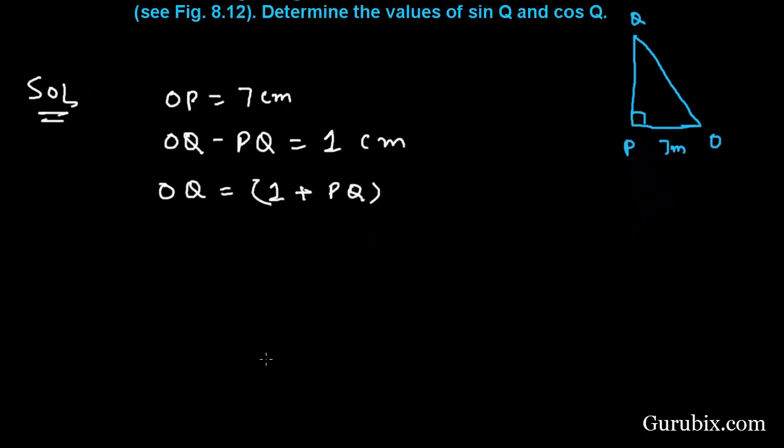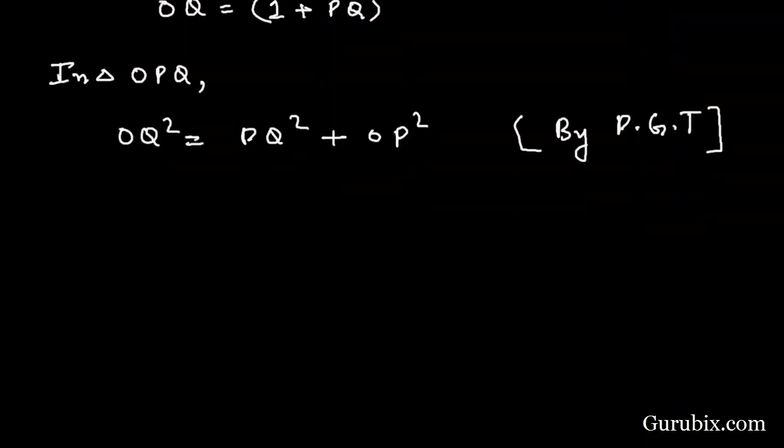Now we shall apply the Pythagoras theorem. In triangle OPQ, OQ squared equals PQ squared plus OP squared by Pythagoras theorem. We have OQ equals 1 plus PQ.